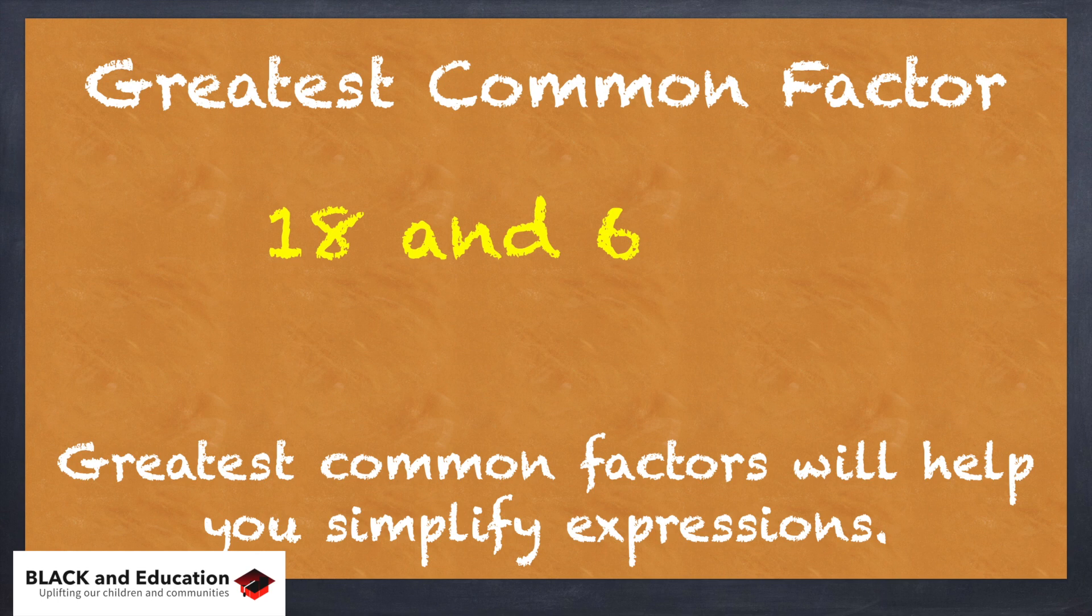So let's say if I have the numbers 18 and 6, and I want to look at the factors of 18. I know that if I multiply 1 times 18, I'm going to get 18, or if I multiply 2 times 9, I'm going to get 18. These are factors of 18. They divide evenly into 18.